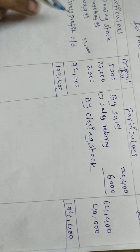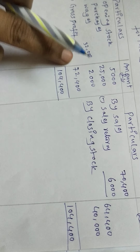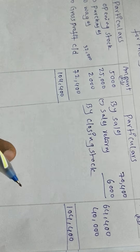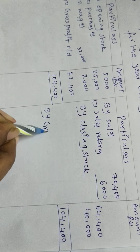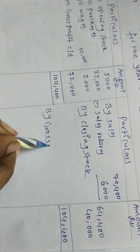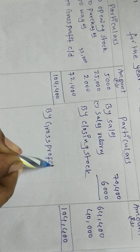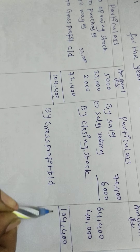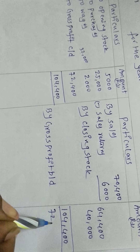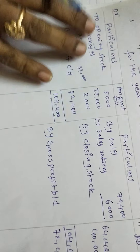The gross profit of 72,400 is to be transferred to the profit and loss account as 'By gross profit brought down' — 72,400. Trading account is over.